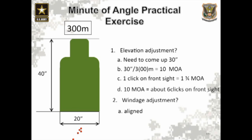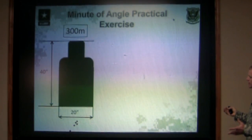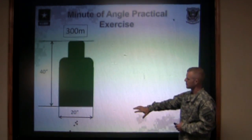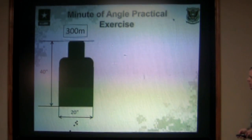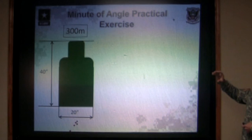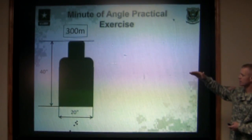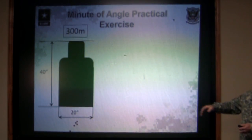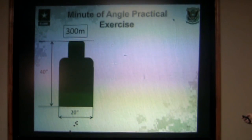Here we have the standard E-type silhouette at 300 meters — again, 40 inches tall and 20 inches wide. We shot a five-shot group on target and as you can see, it's about 10 inches or so off the bottom side of that target. If we're 10 inches off the bottom of the target, the center would be 20 inches from the bottom, and we're another 10 inches lower than that, so we need to move a total of 30 inches to get our group to the center of the target.